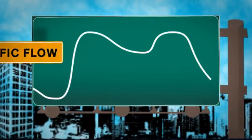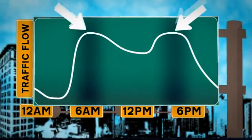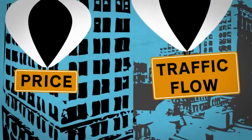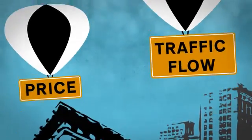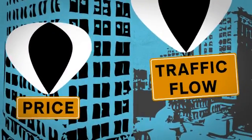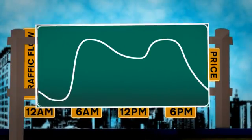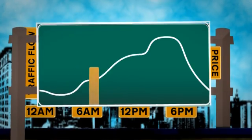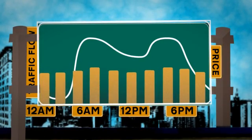This graph is traffic flow against time of day, where these are the rush hours, or peak times. Now imagine that price is tied to traffic flow. So when traffic flow shoots up at rush hour, price goes up too. And when traffic flow falls, price falls. That system is called congestion pricing. Raising and lowering the price pumps traffic up and down. So if we raise the price at rush hour and lower it at other times, it will stabilize traffic flow.